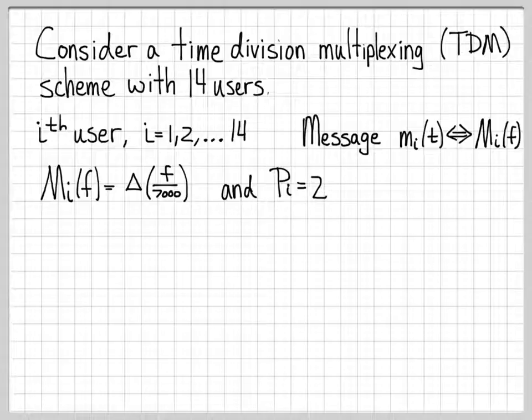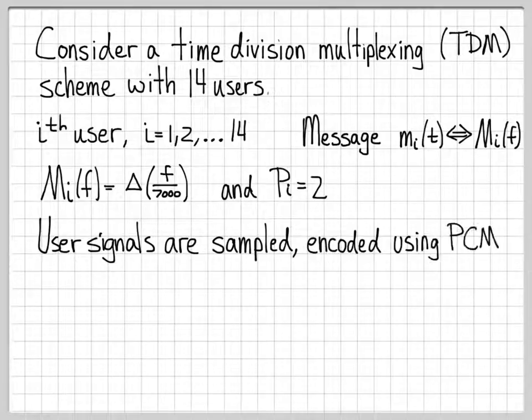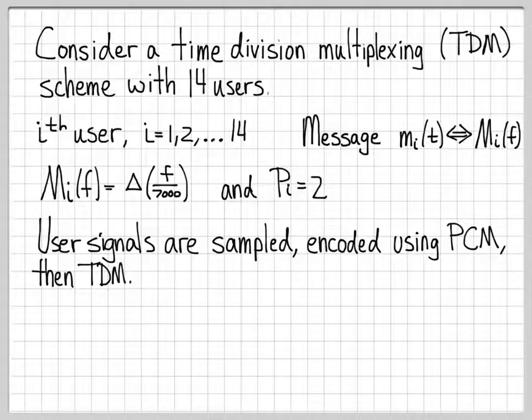We'll also assume that all of their powers are the same. So every user has the same amount of power P_i, and just for concreteness, we're saying that equal to 2. We're going to take these user signals, all 14 of them, we're going to sample them. We're going to encode them using pulse code modulation. So when you do that, you take a sample, you quantize it, and you write it down as a sequence of pulses.